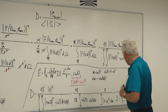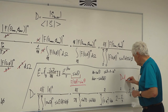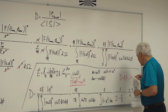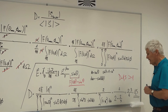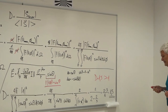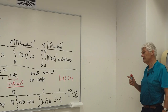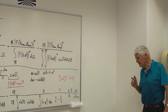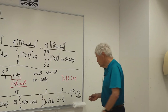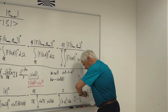The directivity of a short wire segment — which has a sin(θ) radiation pattern — is 1.5, which is larger than 1. So even such a simple antenna as a short wire segment already has a directivity greater than 1. In fact, in radio it is very difficult to make truly omnidirectional antennas.